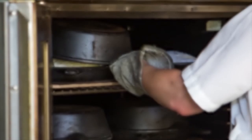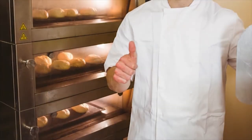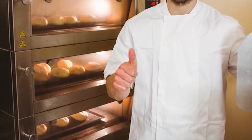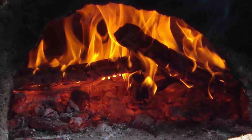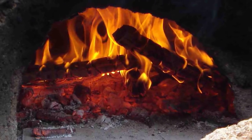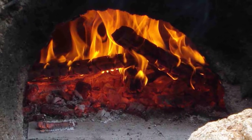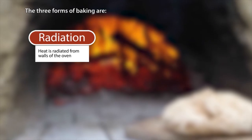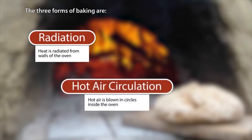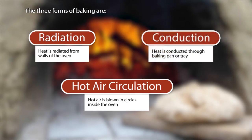Overview of the baking process. Baking is the method of cooking food with the help of dry heat controlled in an oven, hot ashes, or hot stones. A combination of three forms of heat is used for the baking process. These three forms are: Radiation — heat is radiated from the walls of the oven; Hot air circulation — hot air is blown in circles inside the oven; and Conduction — heat is conducted through the baking pan or tray.